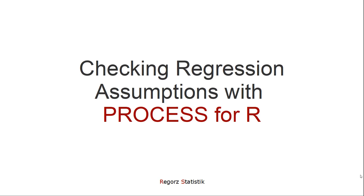Welcome to this video about checking regression assumptions with PROCESS for R. If you run a mediation, a moderation, or a moderated mediation with a PROCESS macro for R, you're running regression models. And regression models have assumptions, and you have to check them. Unfortunately, PROCESS doesn't check the regression assumptions for you. So in this video I'll be showing you different ways how to deal with this problem.